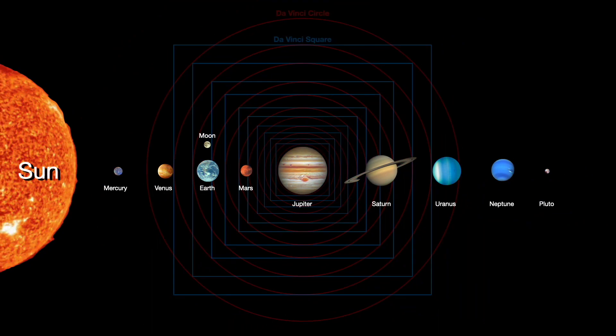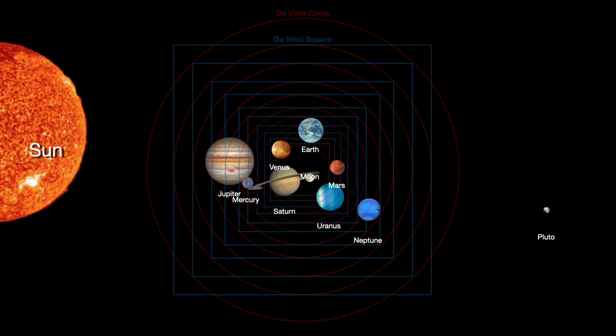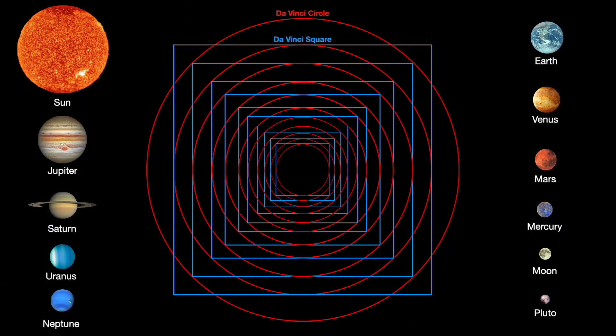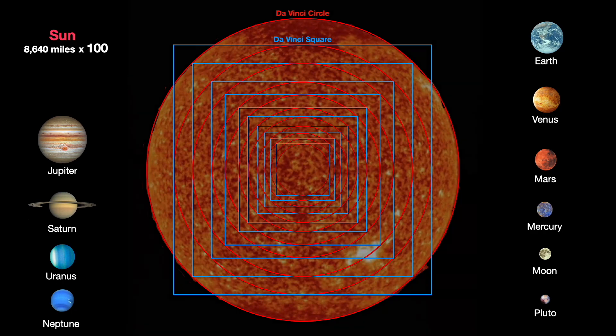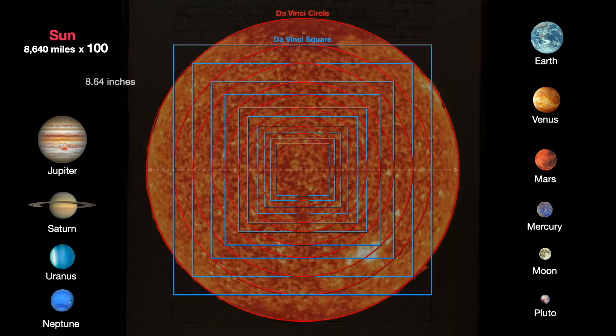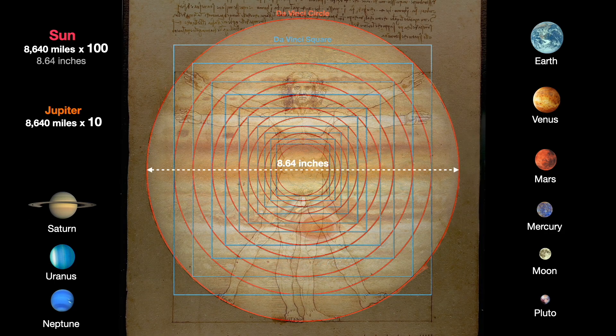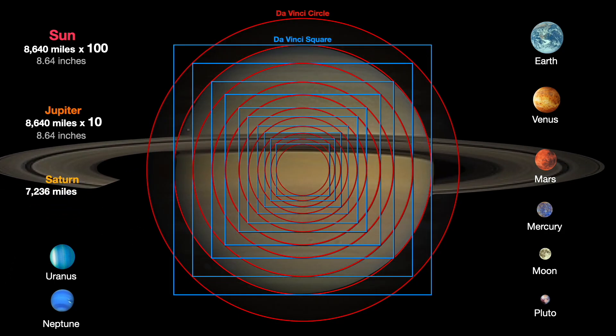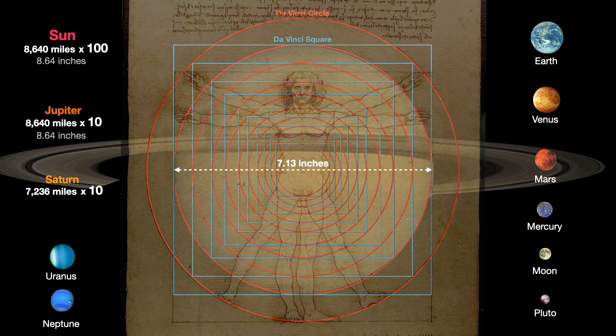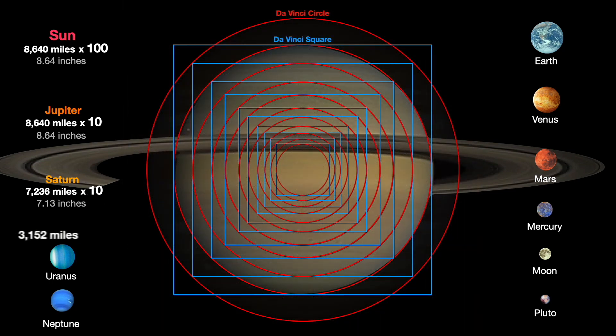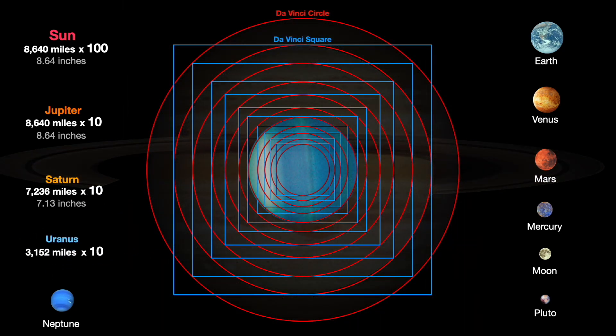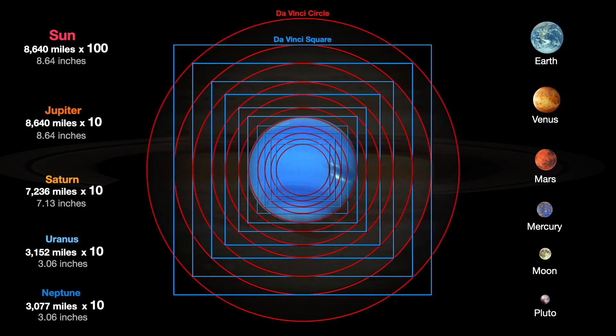These ratios of our family of planets has been attempted before, of course, by Kepler and others, but never quite in this way. The Sun's diameter is a perfect match at 8.64 inches. Jupiter is at a different octave, but still at the 8.64. Saturn comes in at 98.5% accurate. Uranus is 97% accuracy. Neptune is coming in at 99.4%, almost perfect.